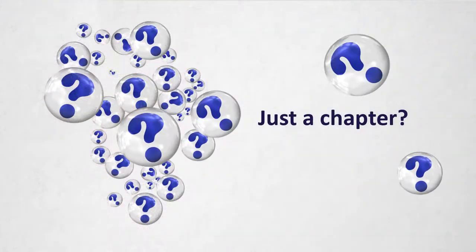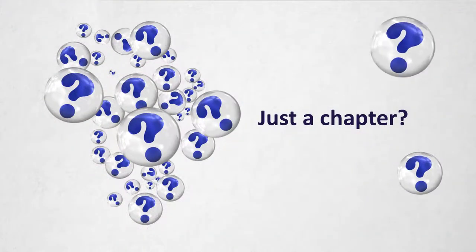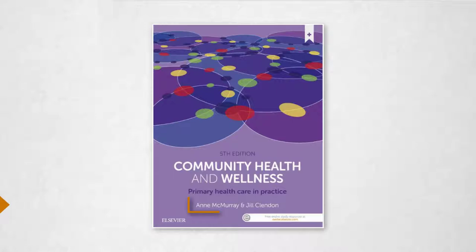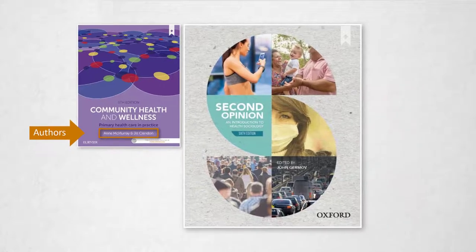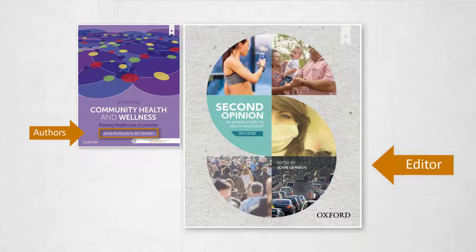Confused about how to reference a chapter in an edited book? The author of a book is the person who wrote the content of the whole book. Sometimes, however, an editor or editors will bring several other authors together to each write a chapter, which are then published as an edited book.